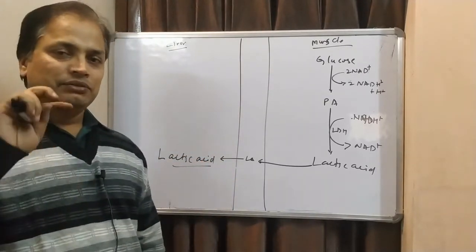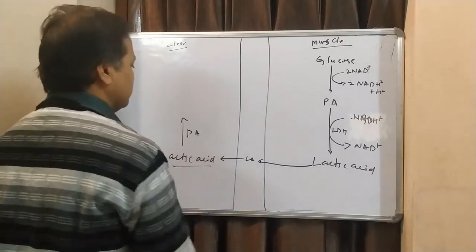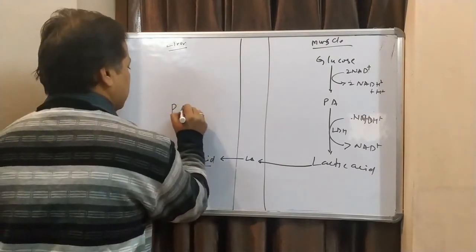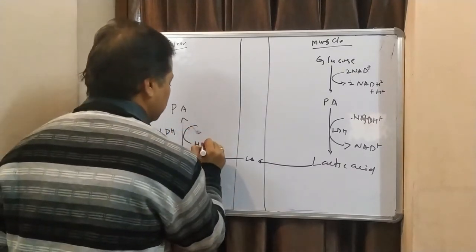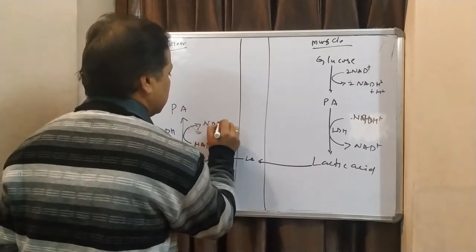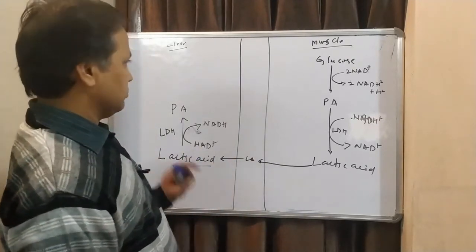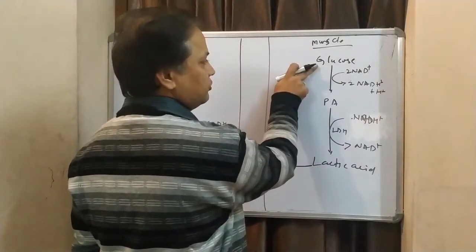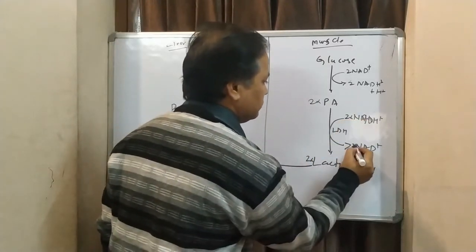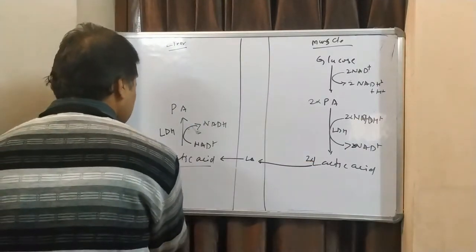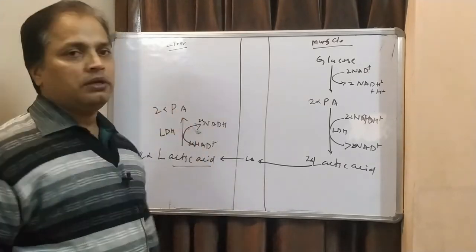Otherwise, sometimes it will go to the renal cortex also. There also, this process occurs. This is muscles, this is mainly liver. We have got lactic acid here. This lactic acid will be converted to pyruvic acid, just reverse reaction. It will be converted into pyruvic acid by the same enzyme lactate dehydrogenase. But reversely, we will use NAD+, we will get NADH plus H+. We have got two pyruvic acid. These two pyruvic acid will be converted to glucose.